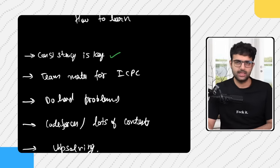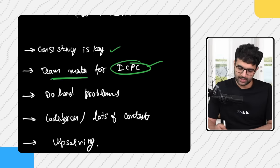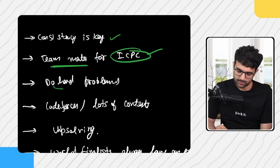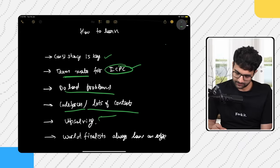Next point: how to learn DSA. First, consistency is key — don't do DSA half-heartedly. You'll be more consistent if you have an end goal in mind, like ICPC. Form a team early, because learning in small groups helps a lot. If there's one really smart person on your team — there was one in mine who eventually went to world finals — they can increase your learning curve significantly. Aim for ICPC, do hard problems, solve a lot of contests, and make sure you're upsolving after each contest.